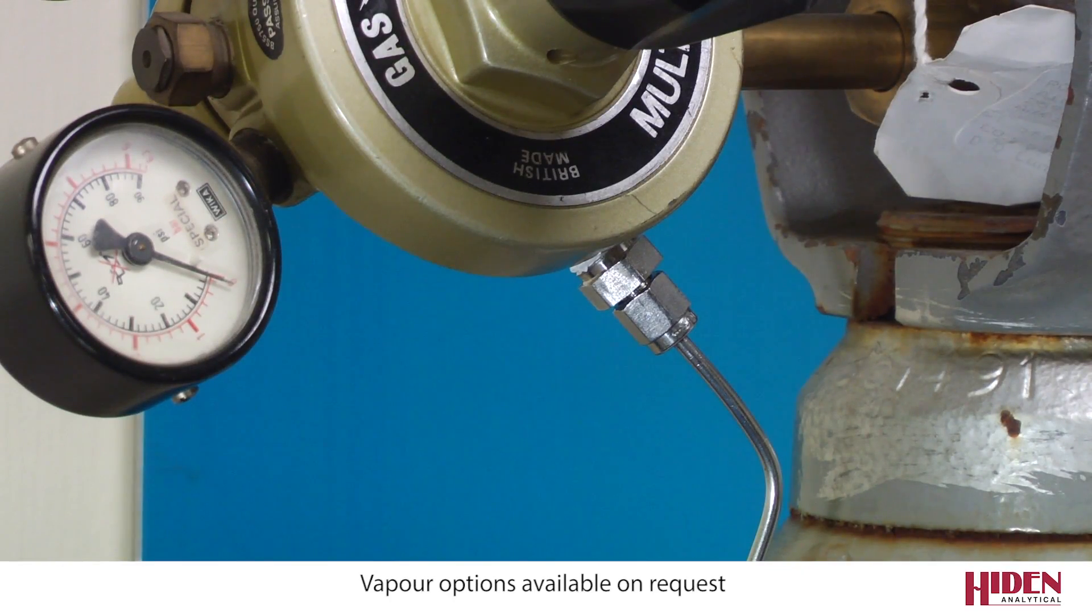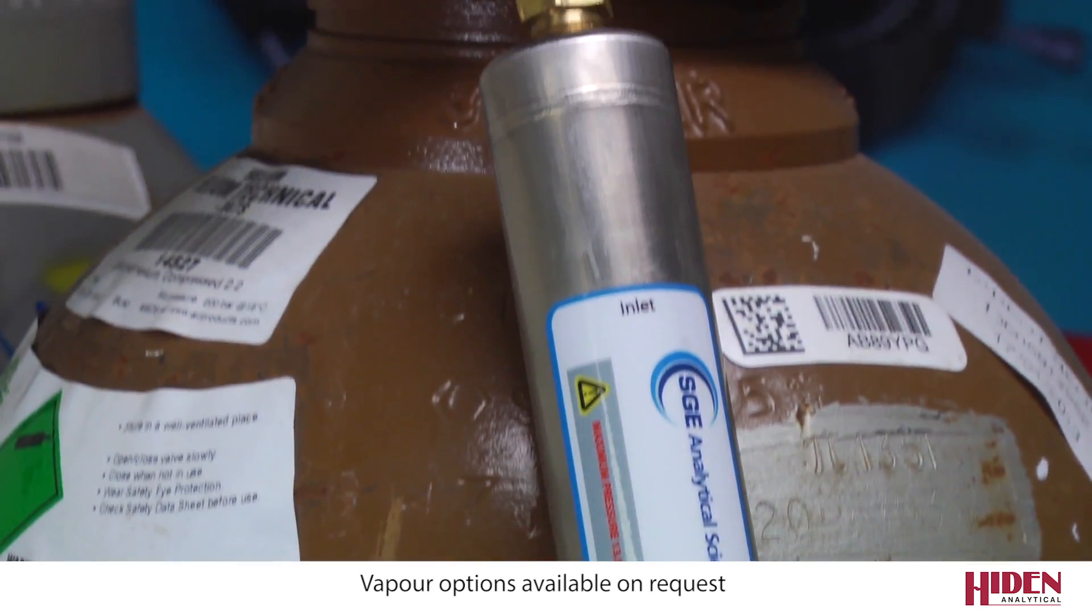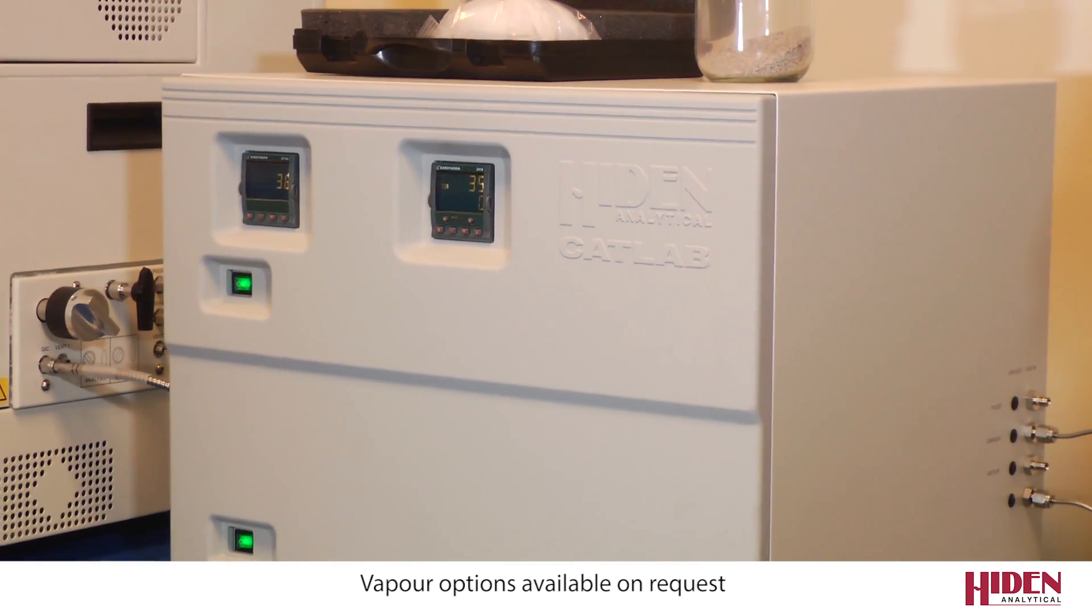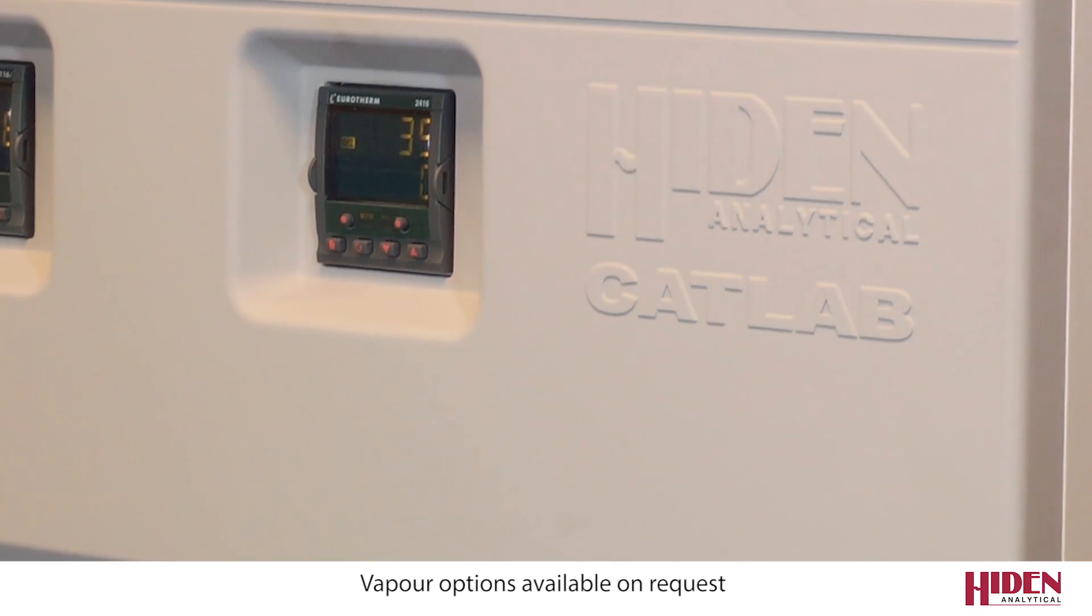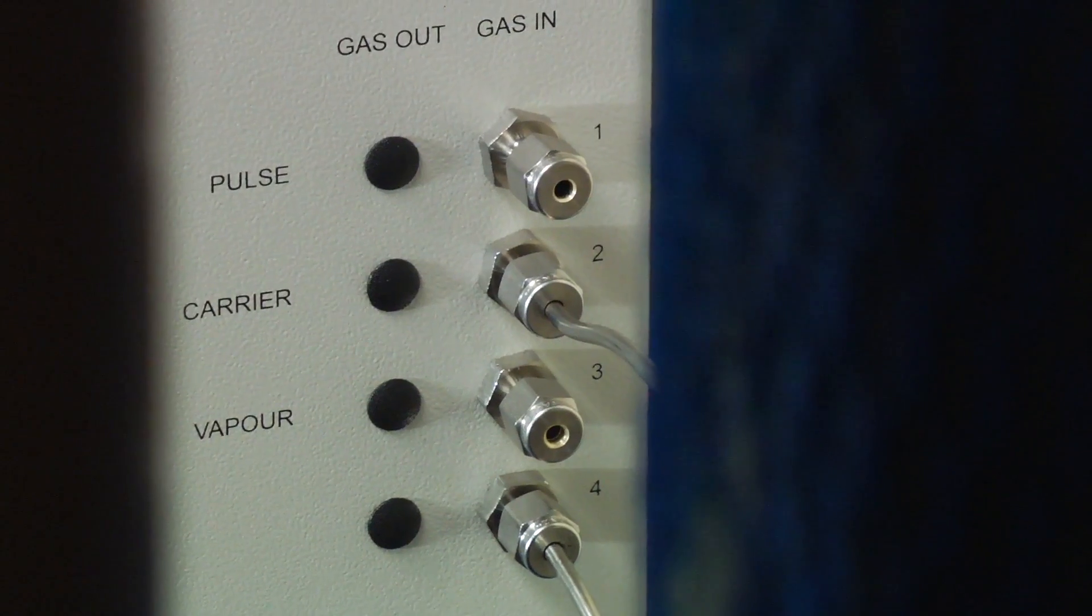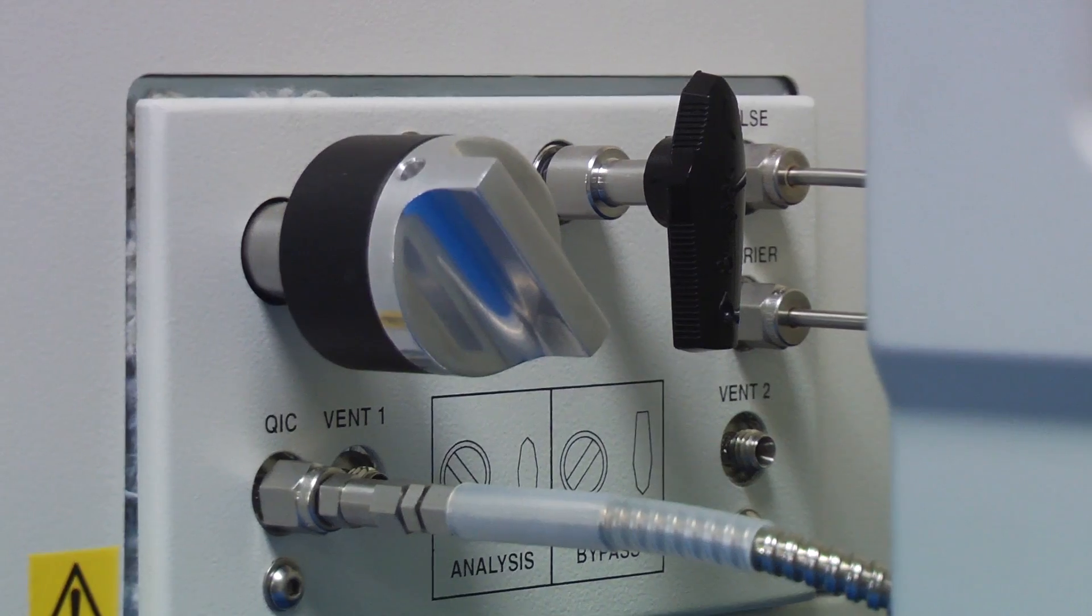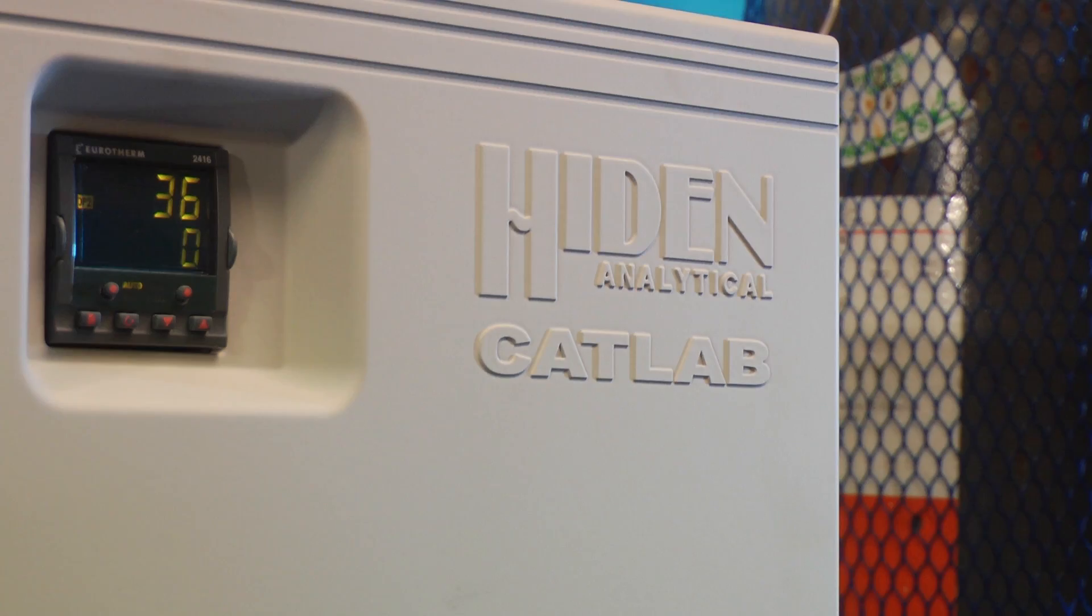Gas mixtures in the reactor are controlled using the gas and temperature control unit. This unit includes four mass flow controllers as standard with automated switching valves to switch between continuous and pulse flow measurements. Connections throughout the system from the gas supply to the mass spectrometer are all standard 1⅛ inch swage lock connections.